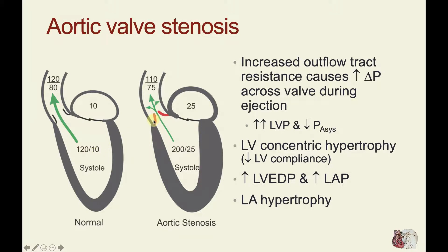When the aortic valve leaflets are thickened and calcified, that valve will not open as far during systole. Because there is a high outflow resistance, the ventricle needs to generate much greater pressures in order to eject flow across that high resistance. In this example, the peak systolic pressure might be as high as 200 millimeters of mercury.